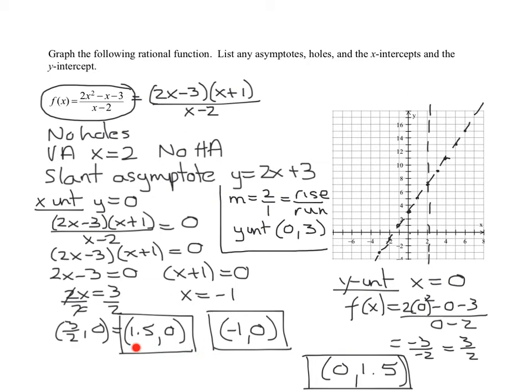So now I need to plot my x and my y-intercepts. Let's start with the x-intercepts. The first one is at 1.5, 0. So I'm going to go 1.5 to the right, which is about there. Then negative 1, 0. So I'm going to start at the origin, go 1 to the left. And my y-intercept is 0, 1.5. So on the y-axis, go up 1.5. And that's about the best I can do here.